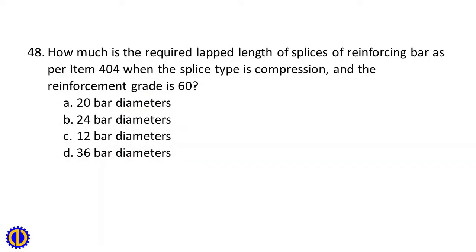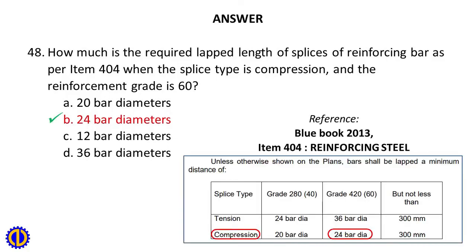Question 48: How much is the required lapped length of splices of reinforcing bar as per Item 404 when the splice type is compression and the reinforcement grade is 60? A. 20 bar diameters, B. 24 bar diameters, C. 12 bar diameters, D. 36 bar diameters. Answer: B. 24 bar diameters. Reference: Blue Book 2013, Item 404 Reinforcing Steel.